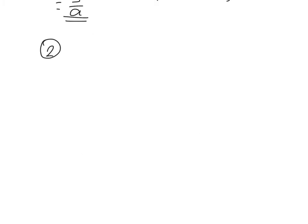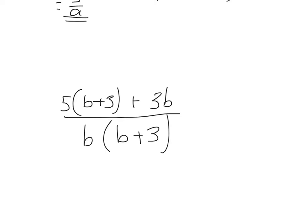Example 2. 5 over b plus 3 over b plus 3. So again, kiss and smile. 5 times b plus 3 plus 3 times b over b times b plus 3. So 5 times b plus 3, I'll introduce a bracket with that one. That's 5 bracket b plus 3 plus 3 times b, which is 3b.